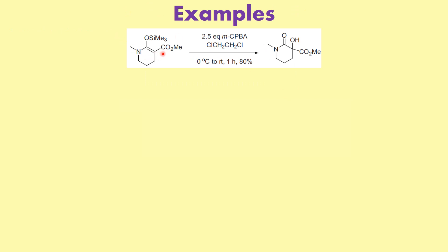In the first example, what we have here is an enol silane — we also have an ester — and this is nothing but an enol silane. We are treating it with meta-chloroperoxybenzoic acid in dichloroethane. In this case, what happens is the alpha-hydroxylation occurs at this position. The silane just comes back and the hydroxylation takes place at the alpha position.